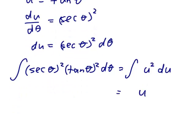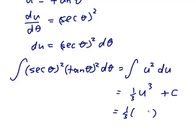So I'll put the power up by 1 and that will become u cubed and divide by 3, and that will be a plus c because it's an indefinite integral. So it will be a third of... Now u is actually tan theta, tan theta cubed plus c.